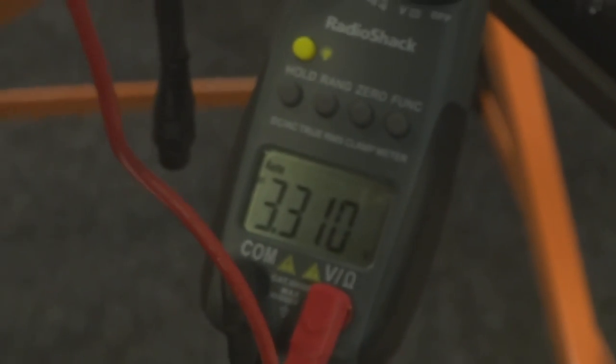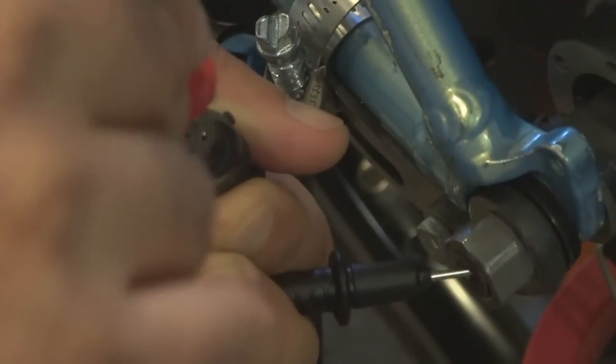So this one should read 3.3 volt which it does, 3.3, 0, 9 or 3.3, 1, 0. Then we go here and that should read 0 volt, it does.